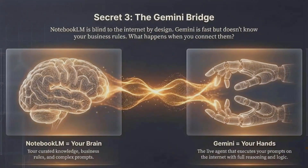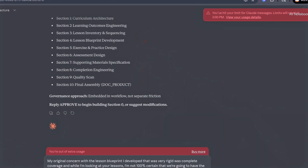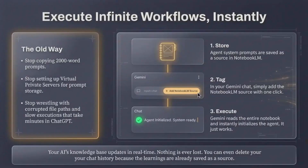Gemini secret number three: NotebookLM is blind to the internet by design — unless you input the sources. Gemini is fast and knows a lot, but it doesn't know your particular business rules or workflows. When you connect them — treating NotebookLM as your brain and Gemini as your hands — you stop copying and pasting 2,000-word prompts and stop doing complicated workarounds. You can execute infinite workflows easily, and even long multi-thousand-character prompts that would burn through Claude or ChatGPT tokens run without slowing down.